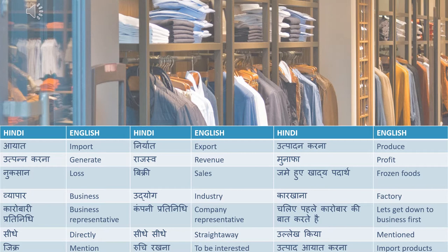The first word in this section is aayat — aayat means import. Niryat means export. Utpadan karna means to produce. Utpadan is product, utpadan means produce. Utpadan karna also means generate. Note the small difference between utpadan and utpadan and remember what to translate from. Rajaswa means revenue, munafa means profit, nuksan means loss, bikri means sales. Jamay huye khadyapadar means frozen foods. Vyapar means business, udyog means industry.